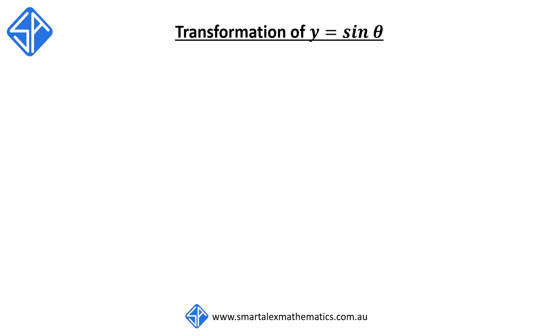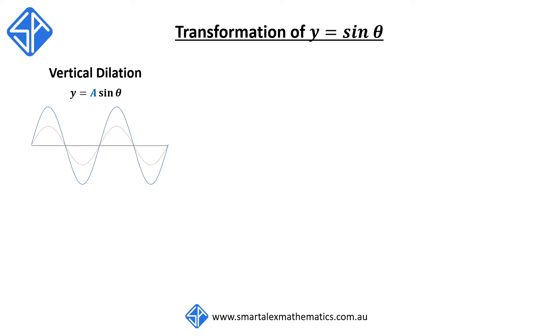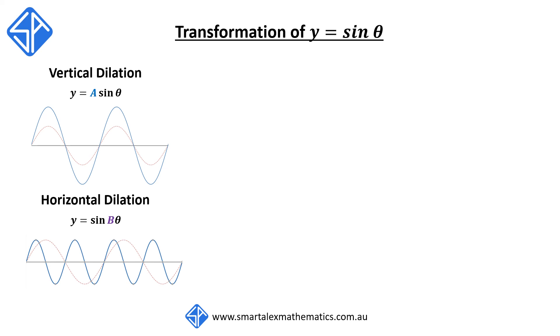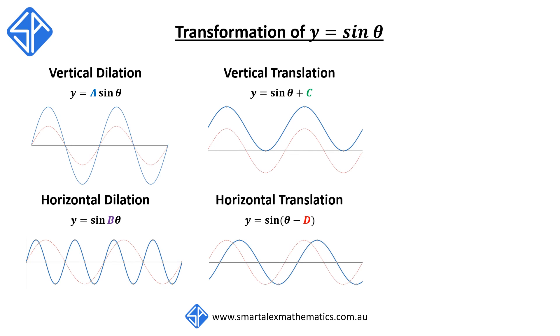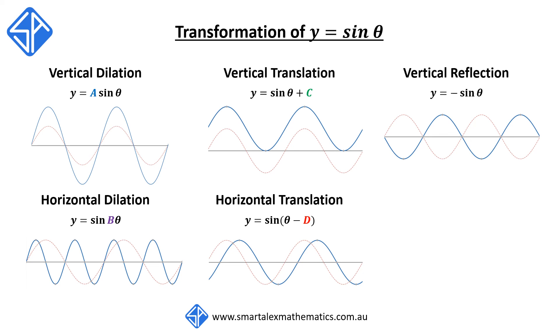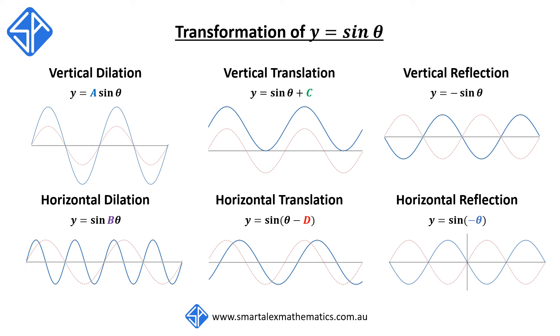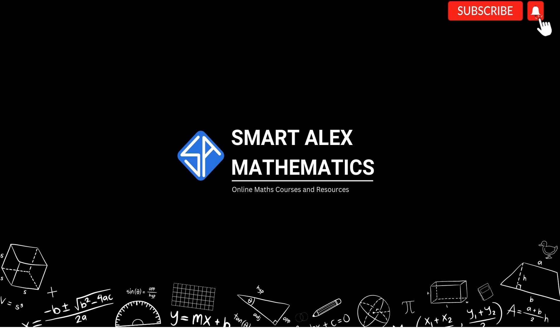In summary, we've covered six different types of transformations for the function y equals sine theta: vertical dilation, horizontal dilation, vertical translation, horizontal translation, vertical reflection, and horizontal reflection. Thanks everyone for watching. In our next video, we're going to look at how to combine all these transformations into a single sine graph.